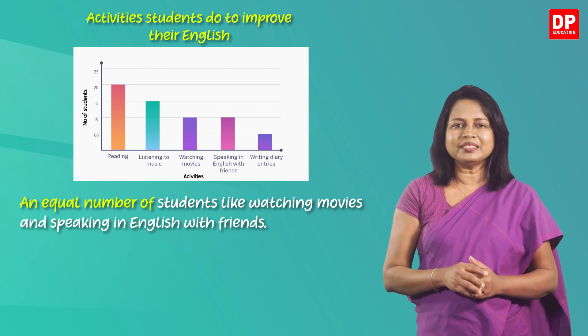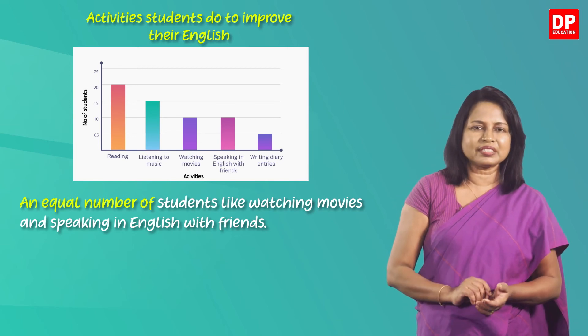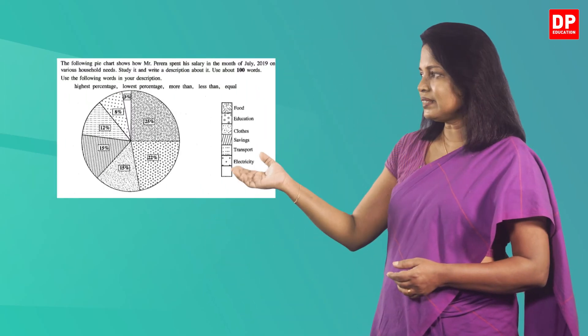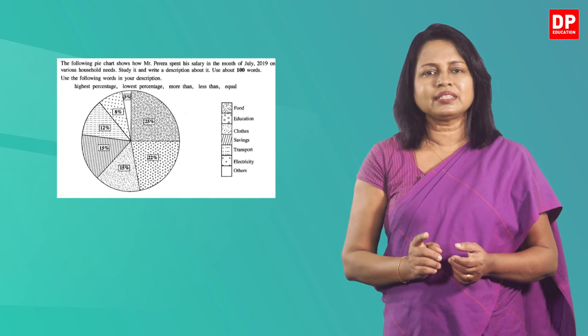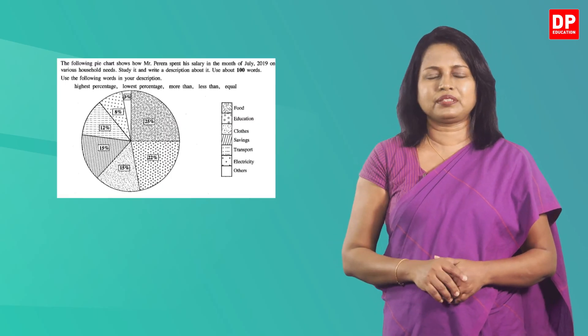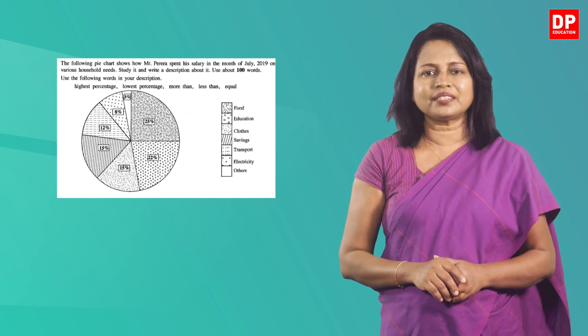I hope now you are clear about the structures and phrases needed to describe charts. Children, now you are going to practice what you have learnt. You are going to describe a chart. As describing charts is a common question at the O level exam, let's try a question from the 2019 O level paper. You have to study this pie chart and write a description of it. You can pause the video and write now.